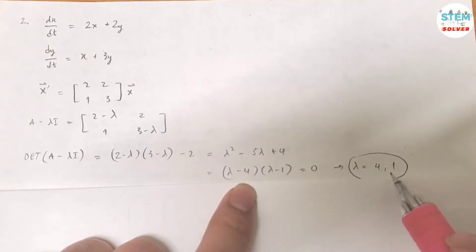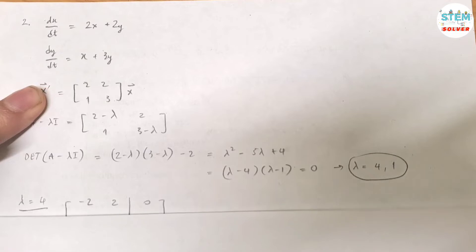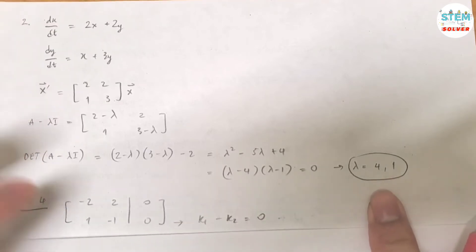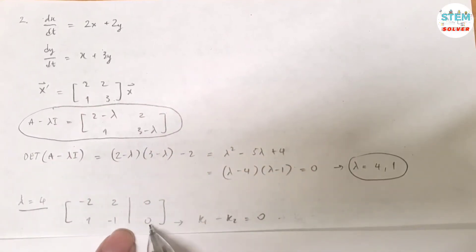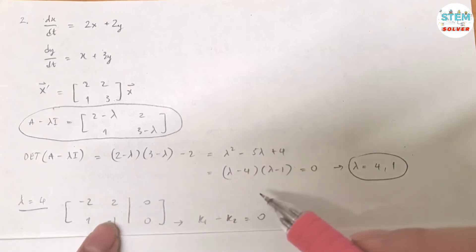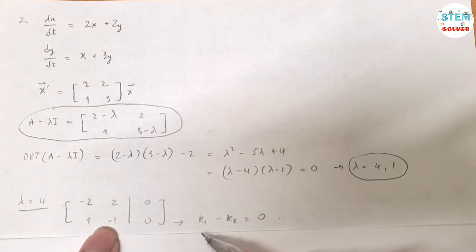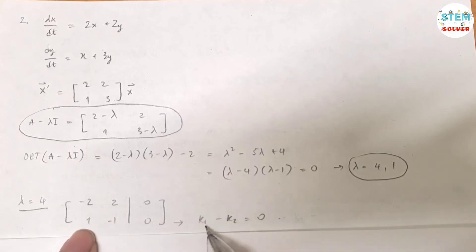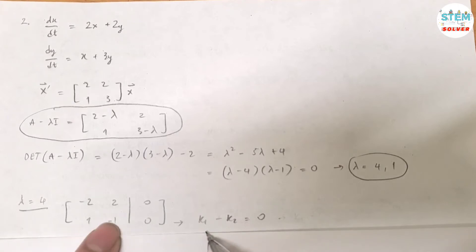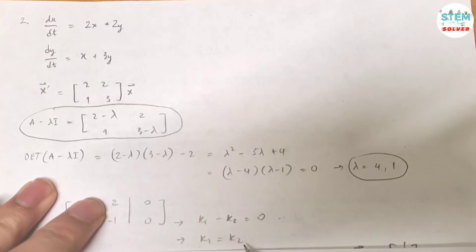For each eigenvalue you will find an eigenvector. For lambda equals 4, plug it into A minus lambda I. That gives you the matrix with entries negative 2, 2, 1, negative 1, augmented with 0. Normally you would row-reduce to solve for k, but this system has infinite solutions, so you can take one equation and rewrite it: k1 minus k2 equals 0, meaning k1 equals k2.